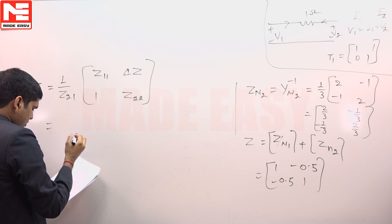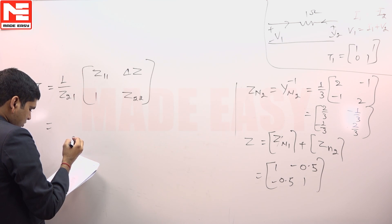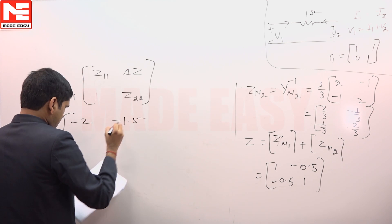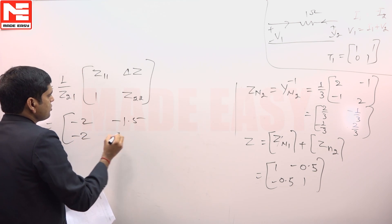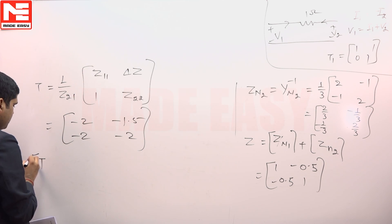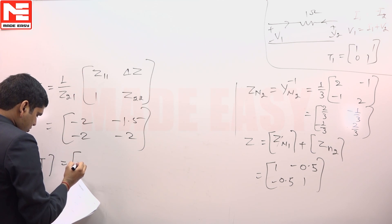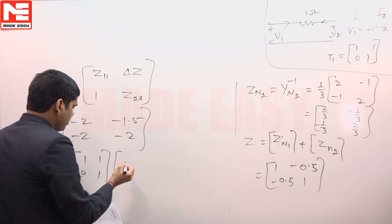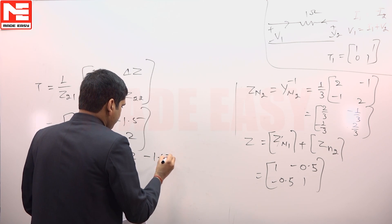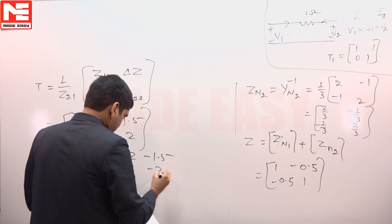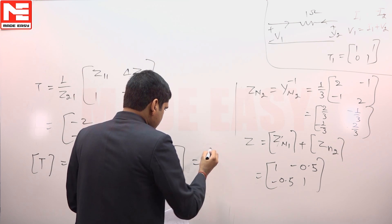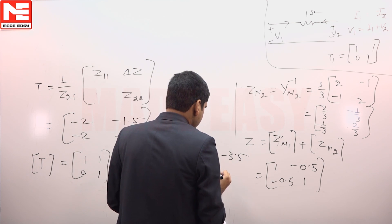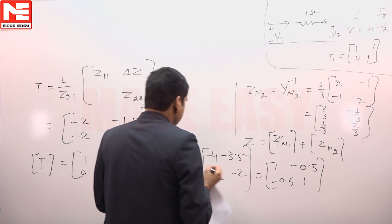So, this will come out as minus 2 minus 1.5 and minus 2 minus 2. So overall T network will be equal to this we have 1 0 1 1 and product of this is minus 1.5 minus 2 minus 2 and this will give us 4 that is minus 4 minus 3.5 minus 2 and minus 2 which is given in option B.